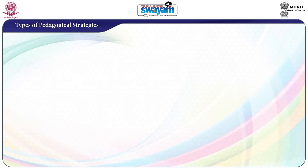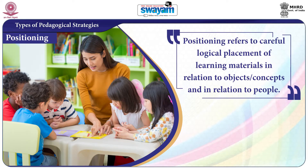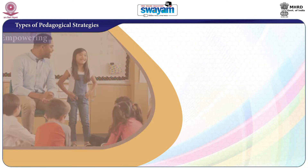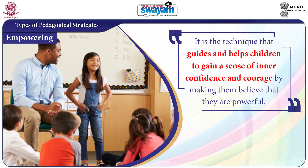The major strategies identified by the National Year's Access Initiative in their professional pedagogy project are listed and defined here. Strategy 1 is Positioning — as a teaching strategy, positioning refers to the careful, logical placement of learning materials in relation to objects or concepts and in relation to people. Strategy 2 is Empowering — a technique that guides and helps children to gain a sense of inner confidence and courage by making them believe that they are powerful.